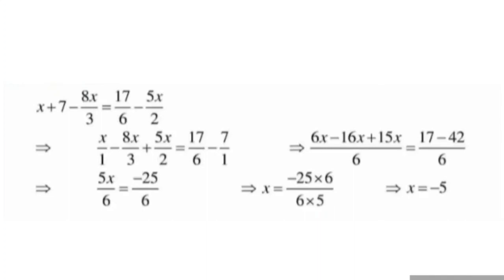Find the LCM of 1, 3, and 2 - that is 6. Multiply accordingly: the numerator becomes 6x minus 16x plus 15x upon 6. On the right hand side, LCM is also 6, and the numerator is 17 minus 7 into 6, which is 42. After simplification on the left: 6 minus 16 is minus 10x, and minus 10x plus 15x is 5x upon 6. So 5x upon 6 is equal to 17 minus 42, which is minus 25 upon 6.